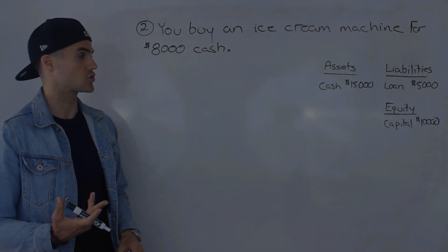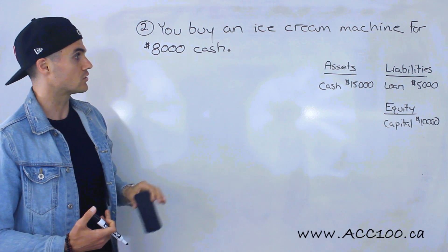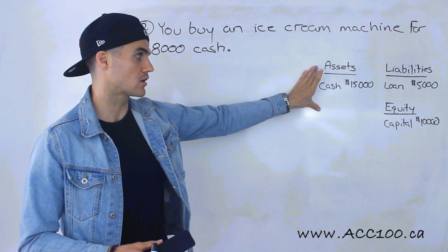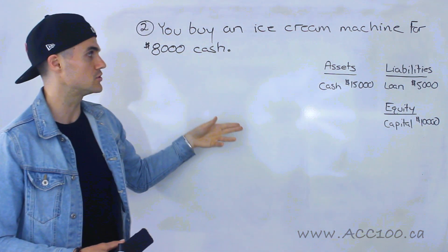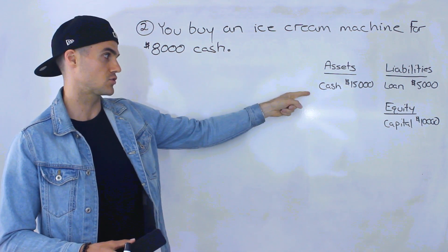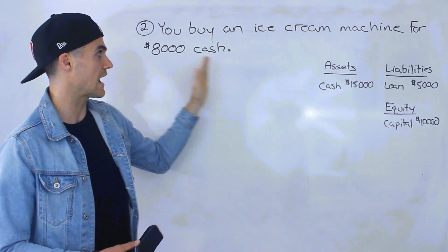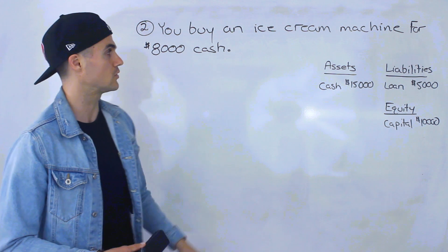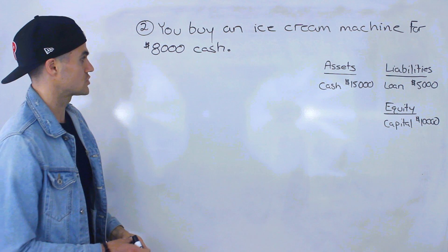Moving on to the second transaction: you buy an ice cream machine for eight thousand dollars cash. I have the balance sheet here from the end of the previous transaction, and I'll be listing out the transactions with the previous balance sheet shown so we can see how this new financial data affects that financial information. You buy an ice cream machine for eight thousand dollars cash.